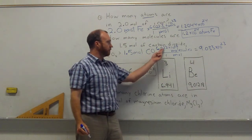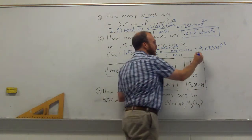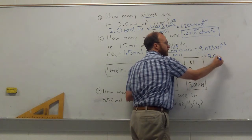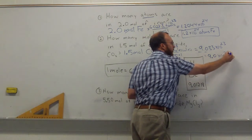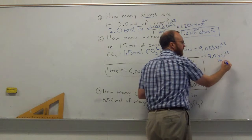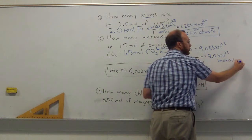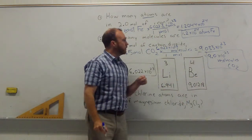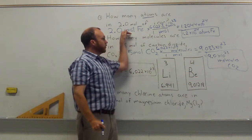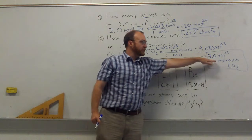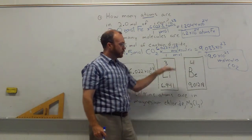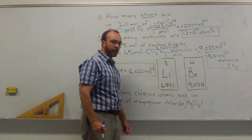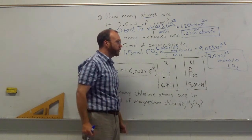We have two significant figures in our measurement and four in Avogadro's number. Two is less, so we round to two significant figures and call our answer 9.0 times 10 to the 23rd molecules of carbon dioxide. Note that we abbreviate moles as mol, so you can't abbreviate molecules that way — just write out molecules so whoever is looking at your answer knows specifically what you're talking about.